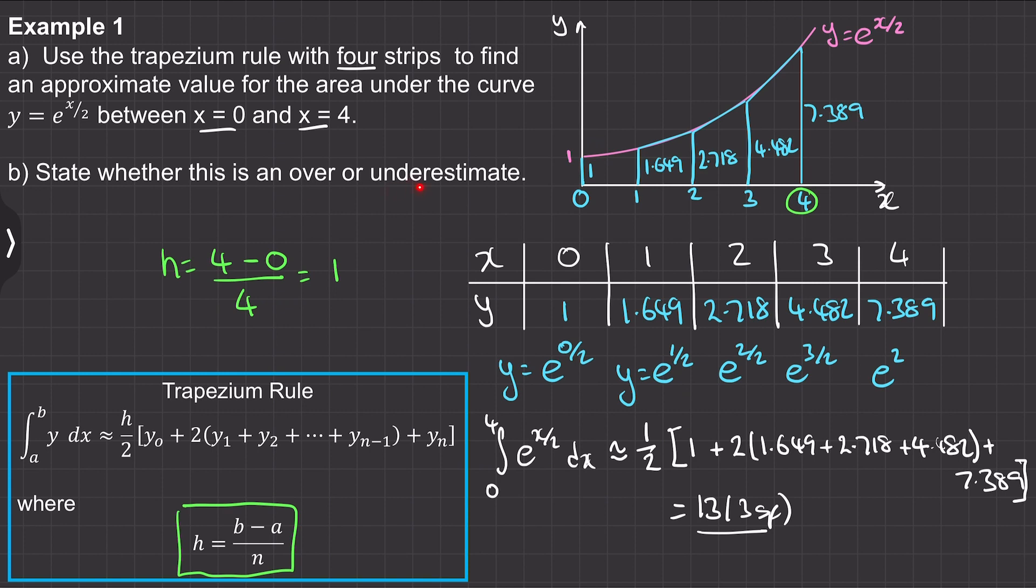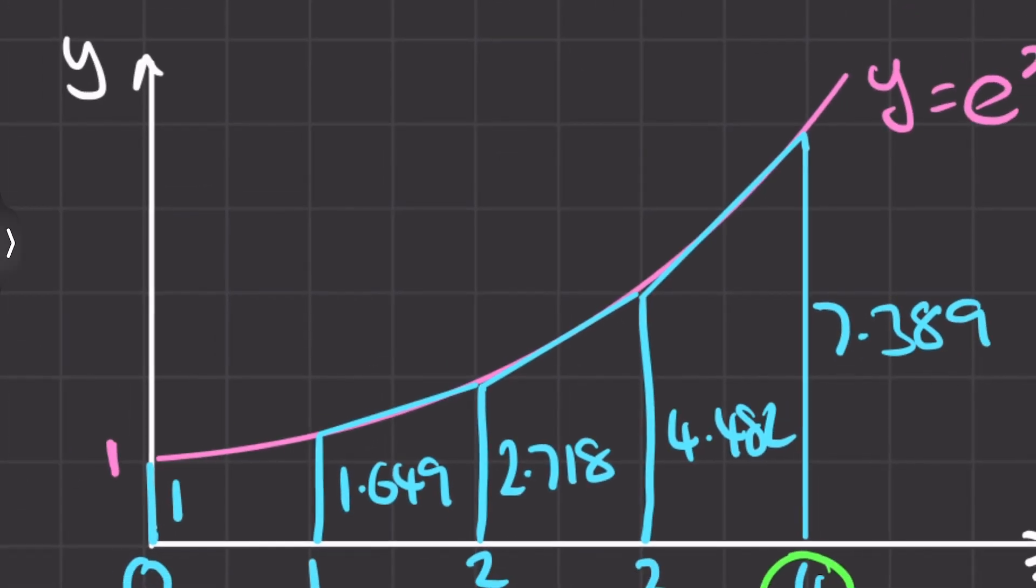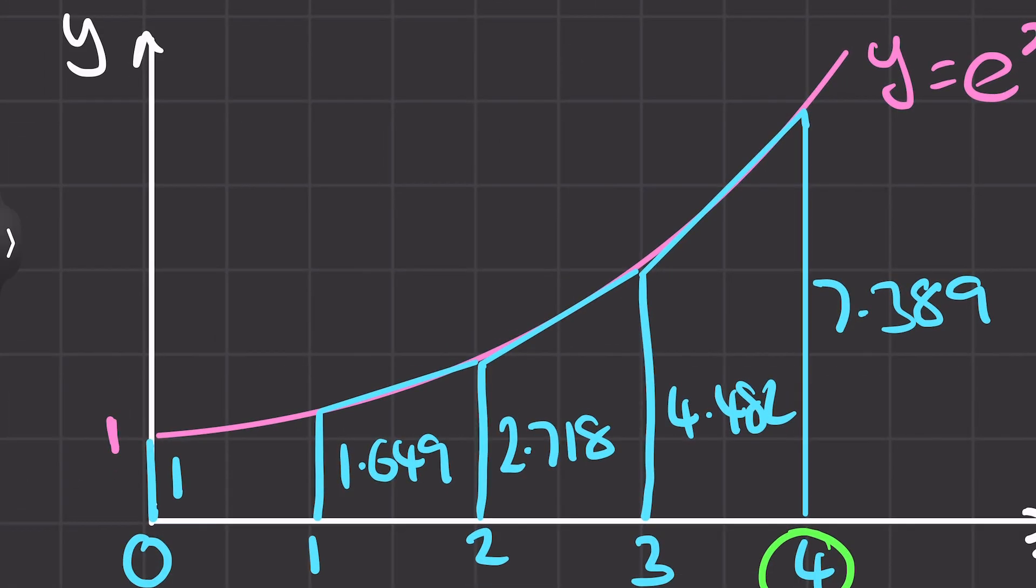So the next part is, is this an over or an underestimate? So if we zoom into our graph you can see that this is an overestimate because the curve lies slightly below that of the trapezium.